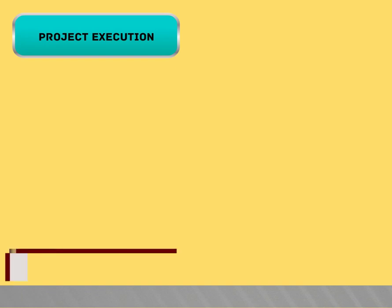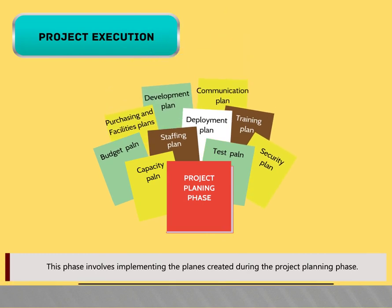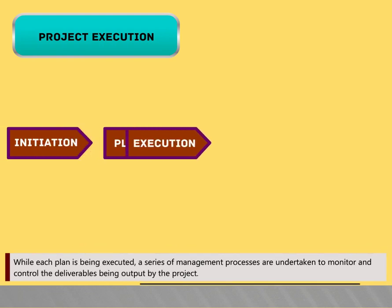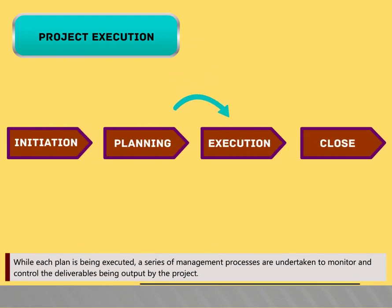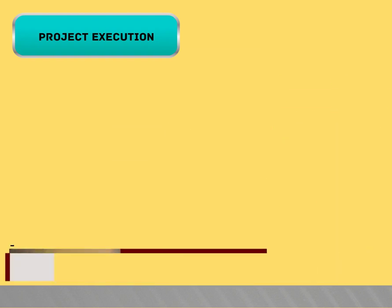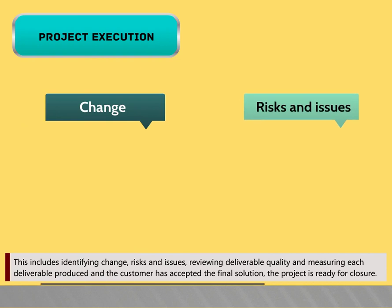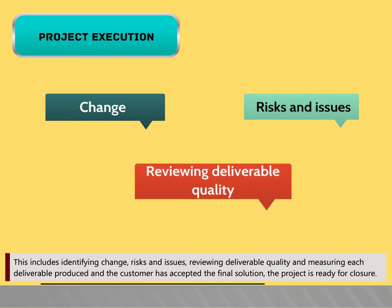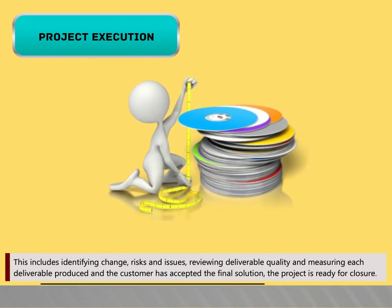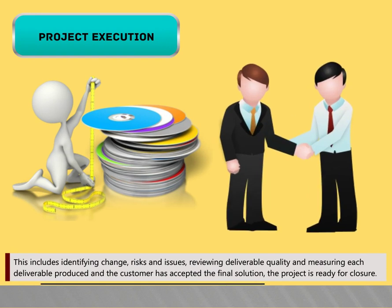The execution phase involves implementing the plans created during the project planning phase. While each plan is being executed, a series of management processes are undertaken to monitor and control the deliverables being output by the project. This includes identifying changes, risks and issues, reviewing deliverable quality, and measuring each deliverable produced. Once the customer has accepted the final solution, the project is ready for closure.